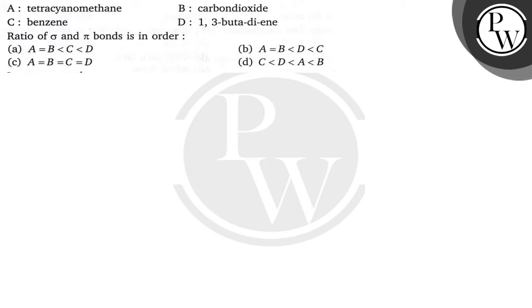Hello bachyo, let's read the question. The question says A is tetracyanomethane, B is carbon dioxide, C is benzene and D is 1,3-butadiene. The ratio of sigma and pi bonds is in the following which order. So we have to find this.